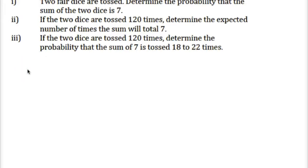If two fair dice are tossed, determine the probability that the sum of the two dice is seven. We can represent this in a couple of ways. Let's do it by a chart.